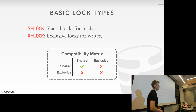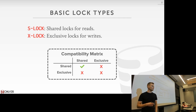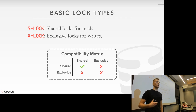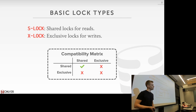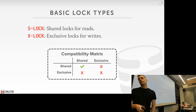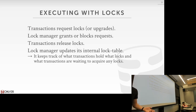We start with two basic lock types: shared locks for reads and exclusive locks for writes. These are similar to the read-write latches from concurrent data structures. The compatibility matrix shows that if you already have a shared lock, you can hand out more shared locks. Exclusive locks are incompatible with any other lock type — you can't hand out multiple exclusive locks, and you can't hand out an exclusive lock when a shared lock already exists.